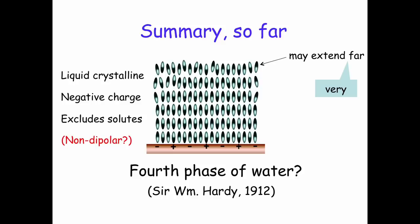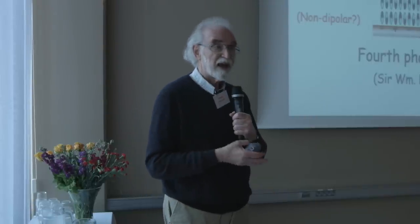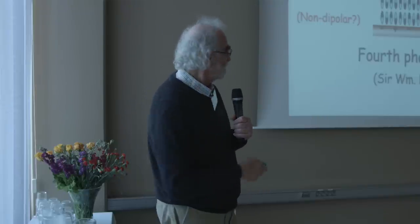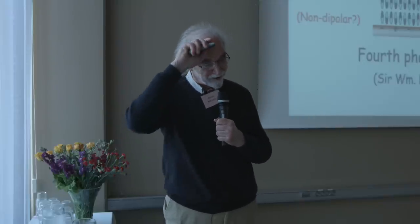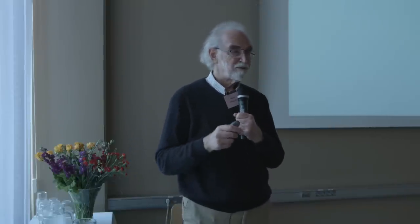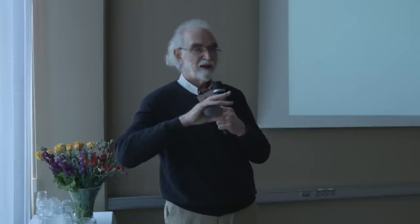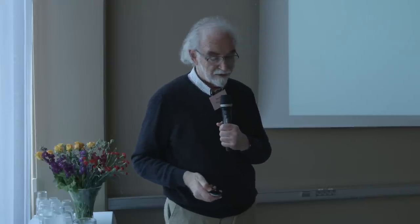Now I want to ask whether dipoles are an adequate representation of the EZ structure. In my previous book I suggested they were, as have many others, but I think that's wrong. Dipoles are neutral — yet this zone has negative charge. You can stack neutral dipoles from here to the moon and never get a net negative charge. Furthermore, the 270-nanometer UV absorption is not characteristic of dipoles — my chemistry colleagues are emphatic about that. It's more characteristic of ring-like structures.